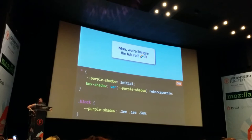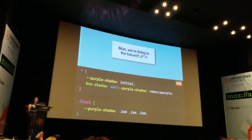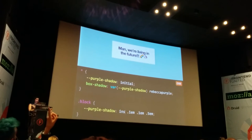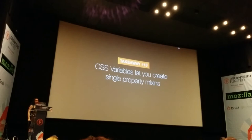Another cool thing: you can create what I call single-property mixins. If you have a property that takes many arguments and you want to pre-fill some of them, you can use variables for that. Here I created a `purple-shadow` property that works exactly like `box-shadow` but without a color argument — the color is always `rebeccapurple`. I can choose which arguments to pre-fill; if I want only the blur to be customizable, I can do that. CSS variables let you create single-property mixins. There used to be an `@apply` rule that is now abandoned, but at least single-property mixins are covered. This might remind you of function currying if you're a programmer.